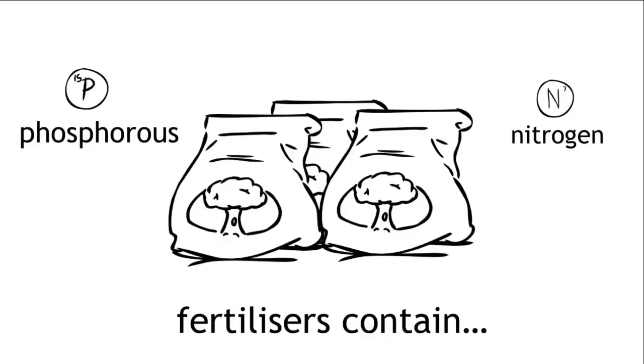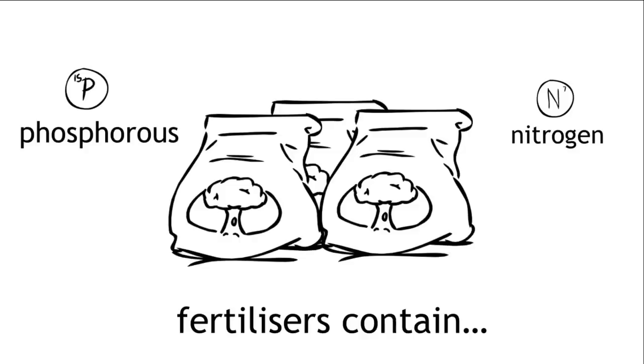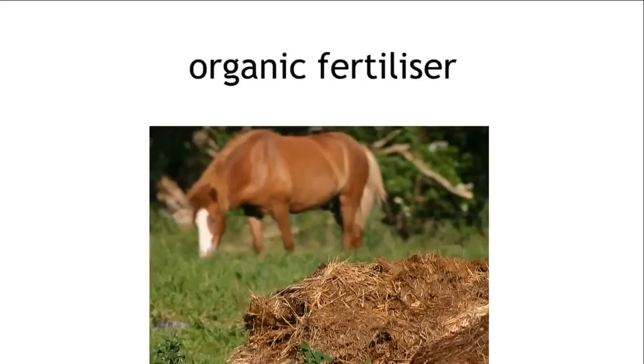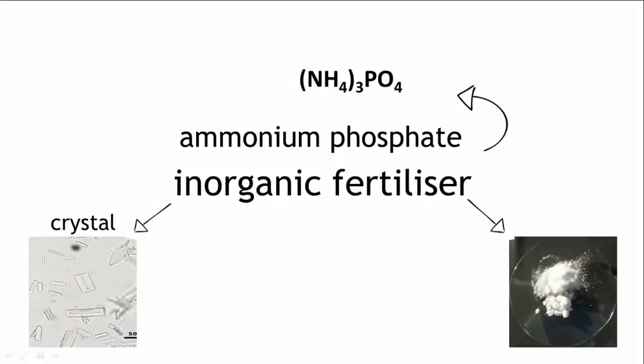Most fertilizers contain nitrogen and phosphorus, though some contain other useful elements like potassium. They can be organic or inorganic. Organic fertilizer contains carbon, and an example of an organic fertilizer is manure. Inorganic fertilizers can take many forms, such as ammonium phosphate, which can be in a crystal or a powdered form.